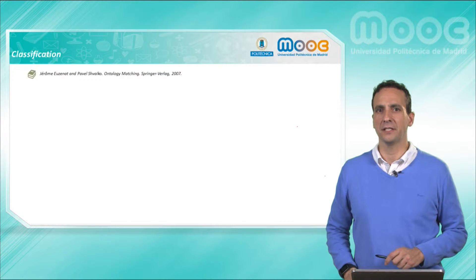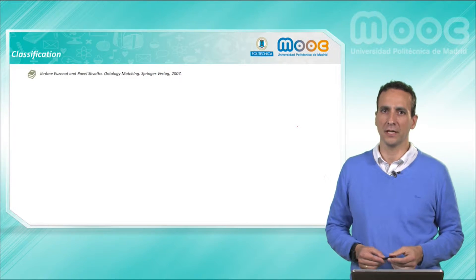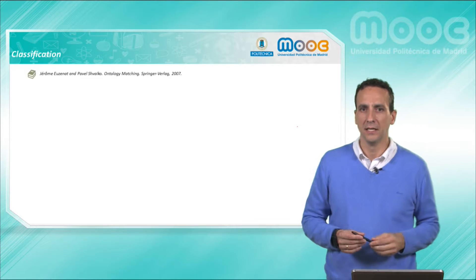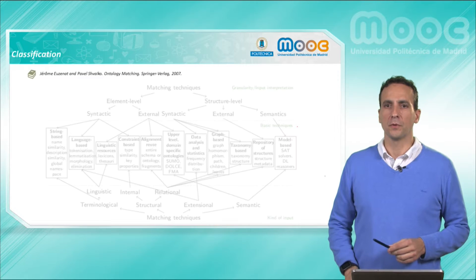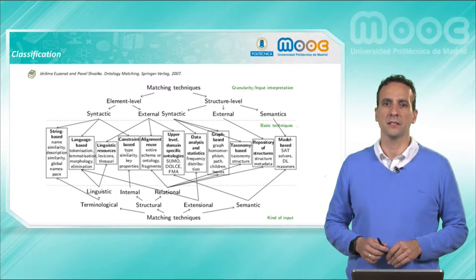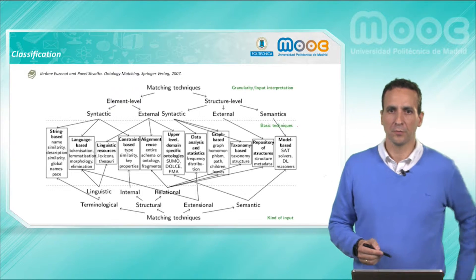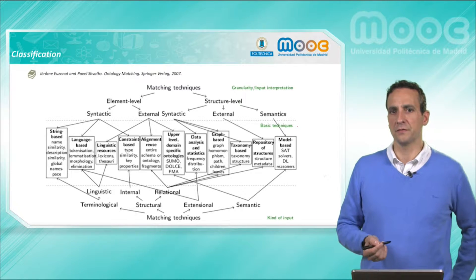In the scientific literature, there are different proposed classifications to organize the set of elementary techniques that can be used for ontology matching. We'll focus here on the one proposed by Shvaiko and Euzenat, which is the one that can be seen in this figure. Actually, these authors propose two different classifications.